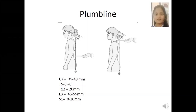For example, if the plumb line measurement at C7 exceeds 40 mm, it means there is forward flexion of the spine in that patient, suggesting increased thoracic kyphosis. And if the L3 distance is below 45 mm, the patient might have reduced lumbar lordosis. That's how you detect clinically the sagittal imbalance with plumb line measurements.